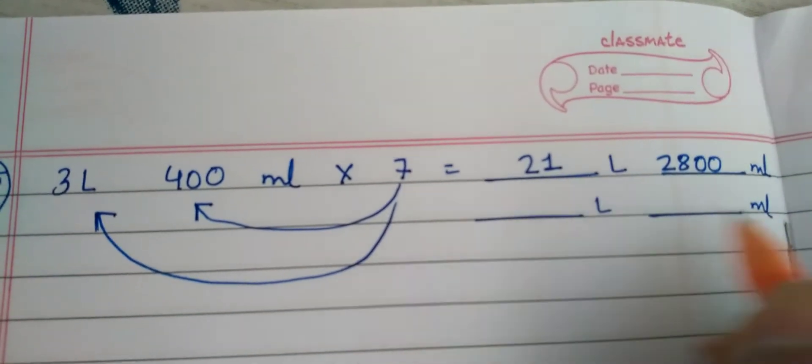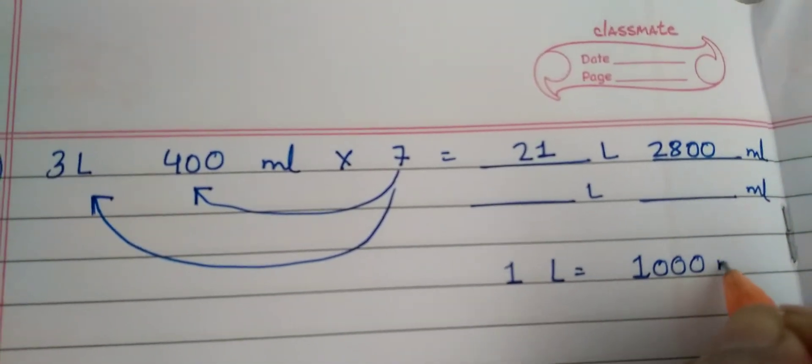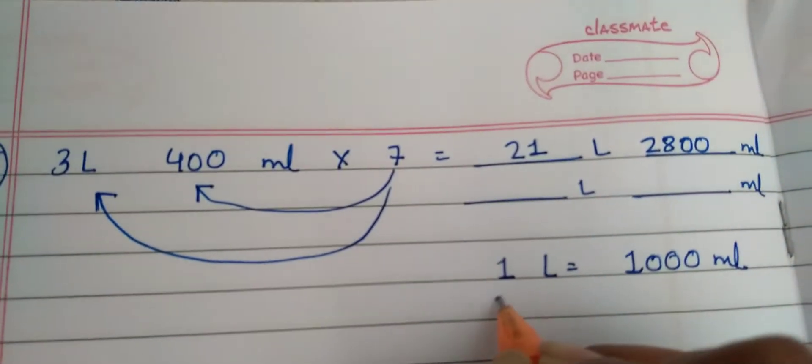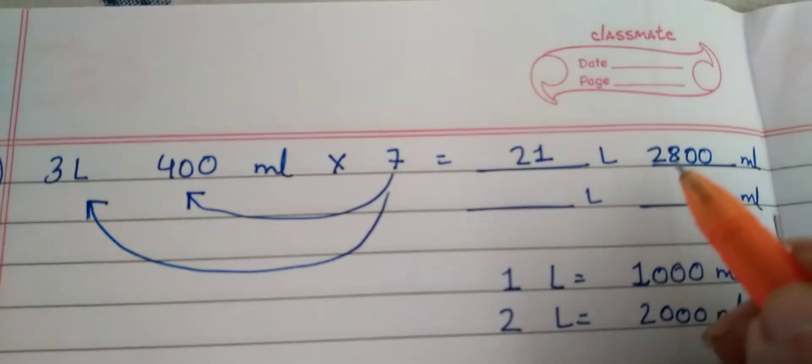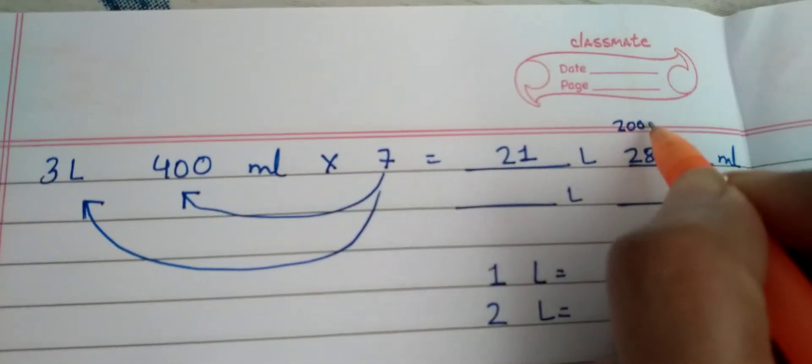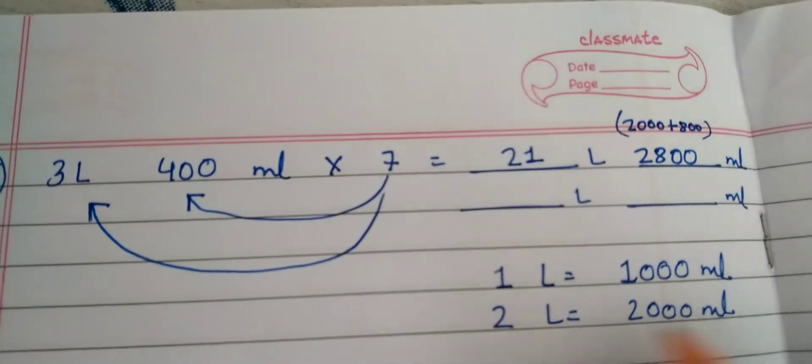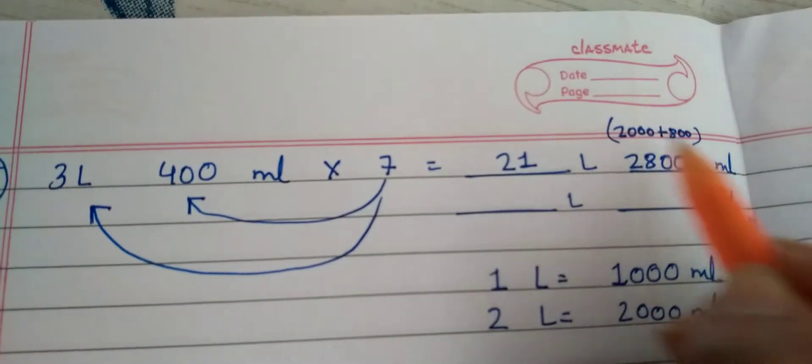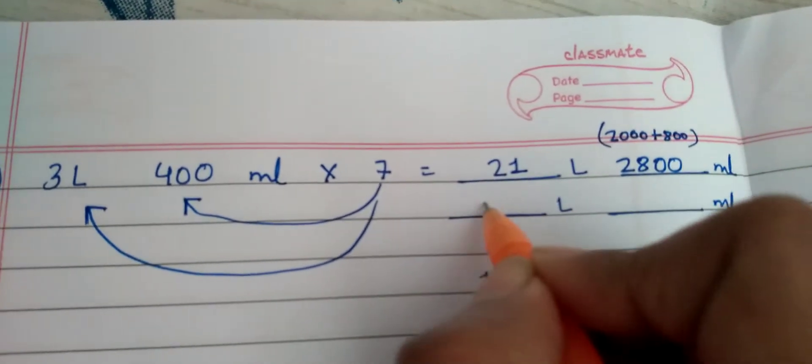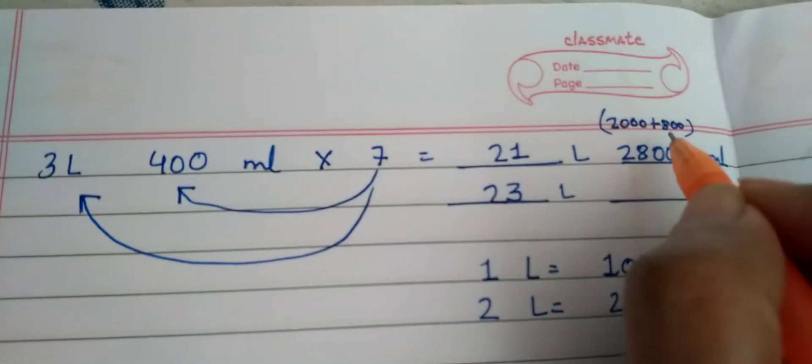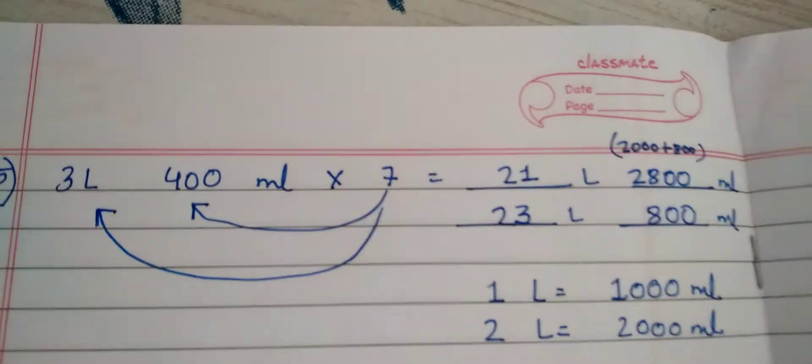Now here we have 2800 milliliters. We're talking about liters and milliliters. We know that one liter is equal to 1000 milliliters. Similarly, two liters will give you 2000 milliliters. 2000 milliliters means 2 liter. 2 liter will go there and you can add 21 plus 2 will give you 23 liters. What is remaining? 800. This is the way you're going to do.